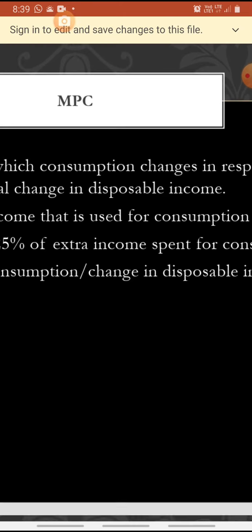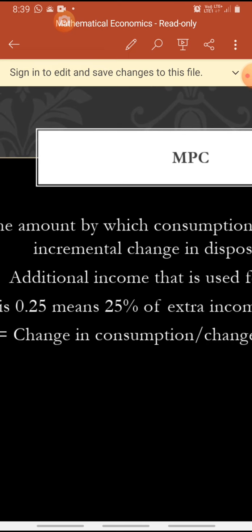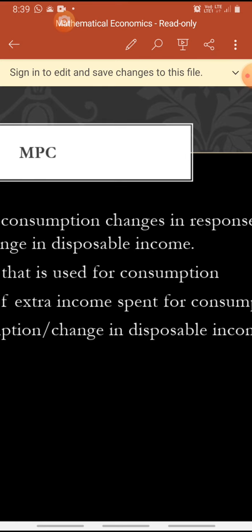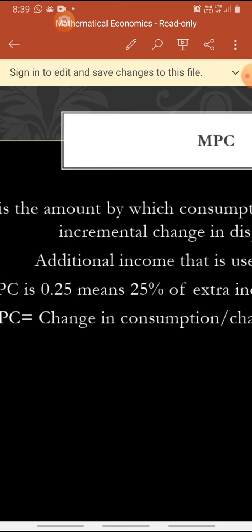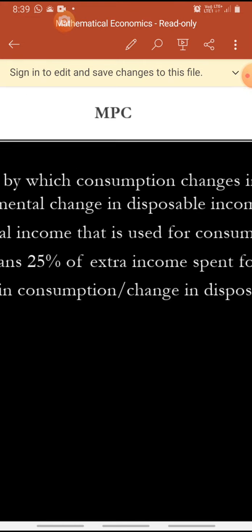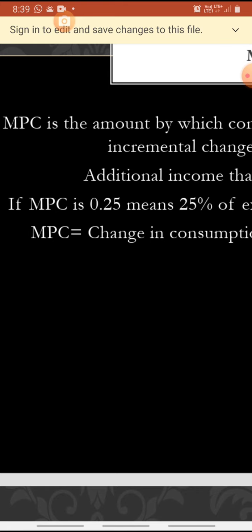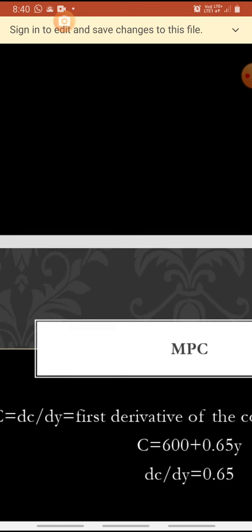Let's take marginal propensity to consume. Marginal propensity to consume is: when we get additional income, what proportion of that income is spent for consumption? It is the amount by which consumption changes in response to an additional change in disposable income. Disposable income means the income meant for consumption after paying all taxes. The additional income used for consumption is marginal propensity to consume. If MPC is 0.25, it means 25% of extra income is spent for consumption.